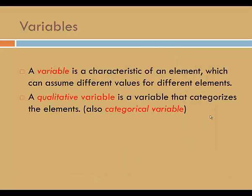Recall that a variable is a characteristic of an element, which can assume different values for different elements. Variables can be classified as qualitative or quantitative. In this video, we'll focus on qualitative variables. A qualitative variable is a variable that categorizes the elements and is sometimes referred to as a categorical variable.